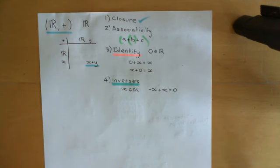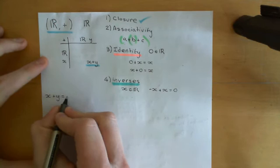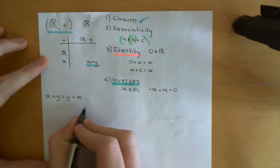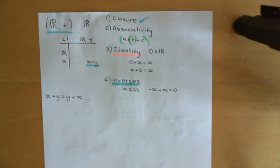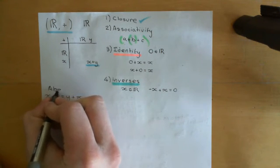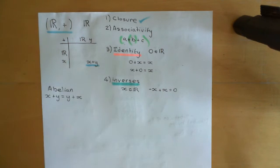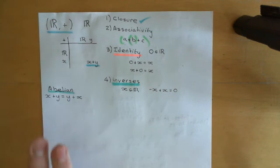In addition, the real numbers under addition also obey commutativity, so we can call this an abelian group. Commutativity means x + y = y + x, which we think of as intuitively obvious in classical algebra, though we know it doesn't hold in all groups. So the real numbers under addition is an abelian group. Now I'm going to discuss the other group that I claim this one is isomorphic to.